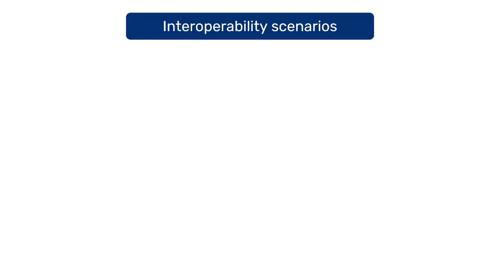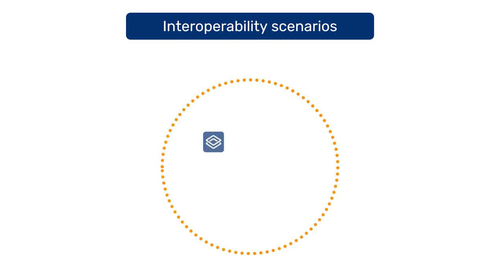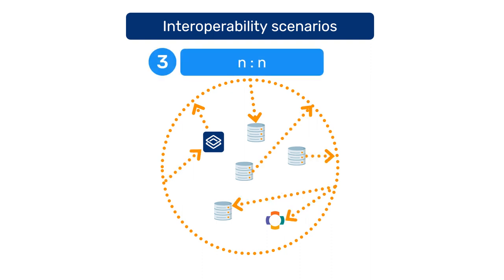There are also more complicated scenarios where DHIS-2 is one of a network of several different systems sending and receiving data from each other. This is an example of end-to-end, or many-to-many, interoperability.